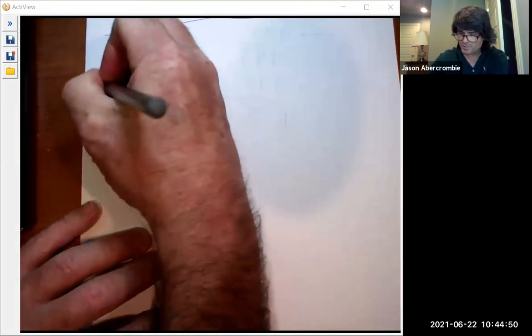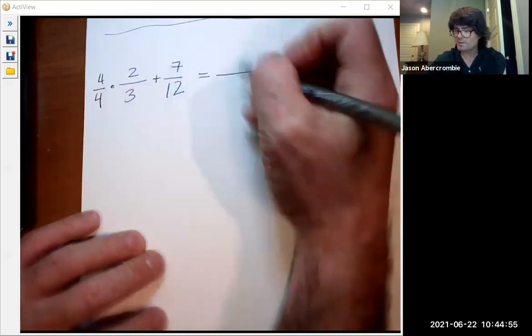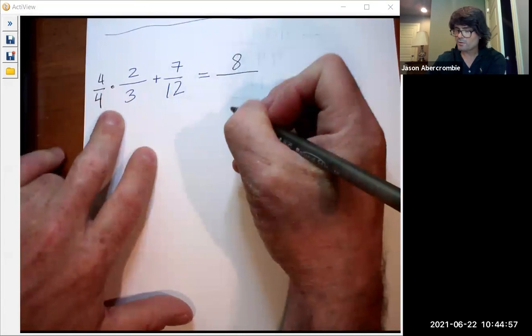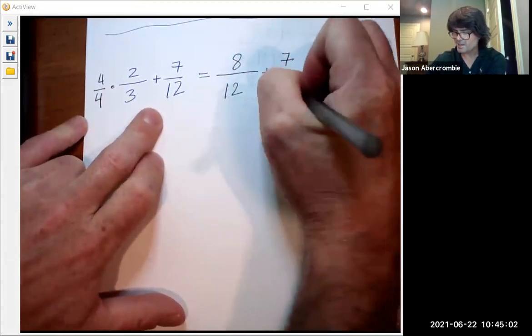All I need to do here is multiply that by a four over four. And so I get four times two on top is eight. Four times three is 12.